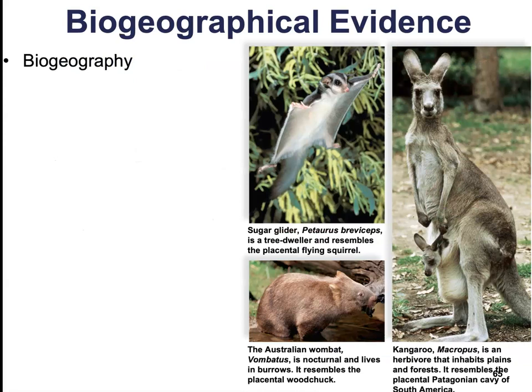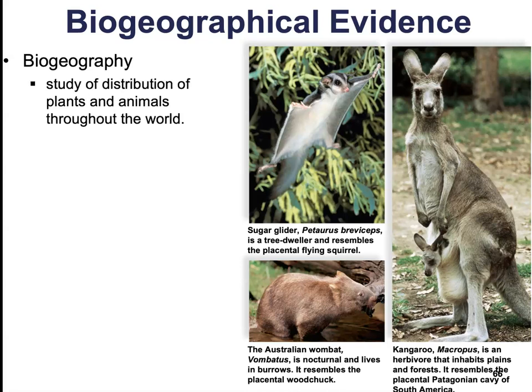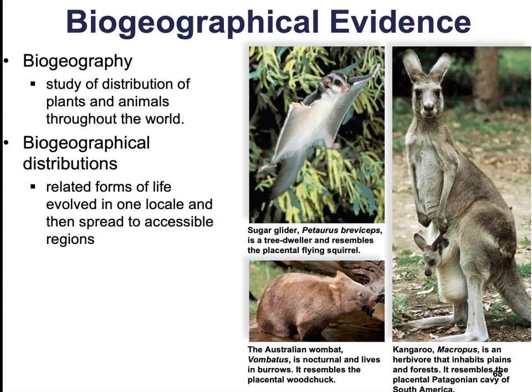There's also biogeographical evidence. Biogeography is the study of the range and distribution of plants and animals throughout the world. Biogeographical distributions are consistent with the hypothesis that related forms of life evolved in one locale and then spread to accessible regions. There's a different mix of plants and animals wherever geography separates continents, islands, seas, etc.